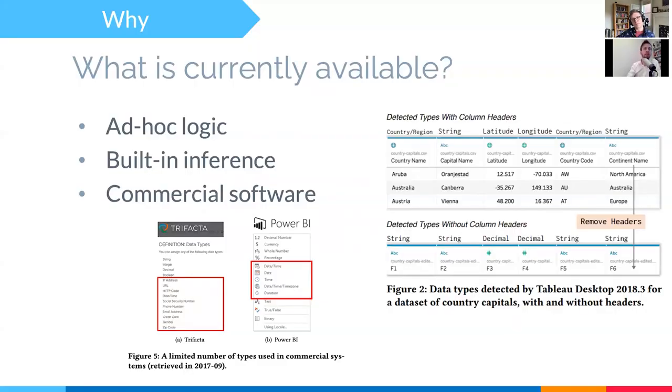Well, what's available currently? We've seen before, you can apply this ad hoc logic, but we are more interested in automating this or making it more efficient. There's, of course, built-in inference in open source tools, but it doesn't allow to customize. We've seen also that it's tricky when you have, for example, one string item. And we've also looked at commercial software, for example, Power BI, Tableau, and Trifacta. They have limited support for semantic types, which are in Tableau dependent on the headers and not on the values.